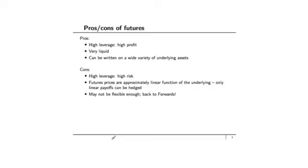Futures prices are approximately a linear function of the underlying, so only linear payoffs can be hedged. If you have a cash flow that is a non-linear function of some underlying asset price or market indicator, you cannot hedge it using futures because futures prices are linear functions of the underlying. Futures may also not be completely flexible — they mature at specified dates, are written for a specified quantity, and are only available for certain commodities. So if you want to hedge something that doesn't quite fit the specifications of futures contracts, you might have to construct a one-off forward contract, or take on something called basis risk, which we'll cover later in this module.